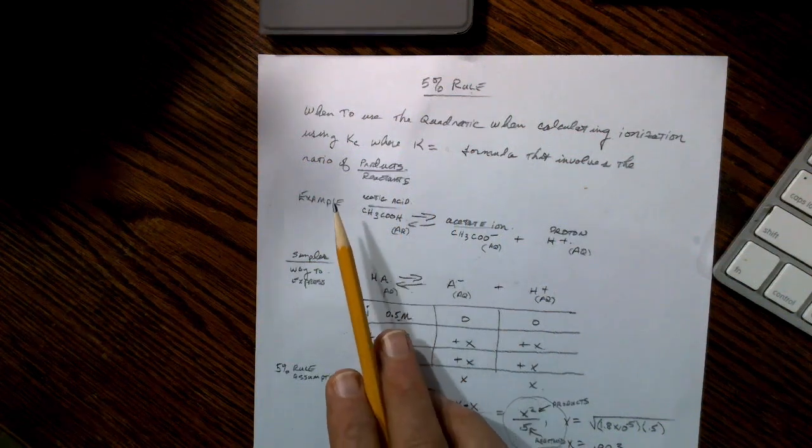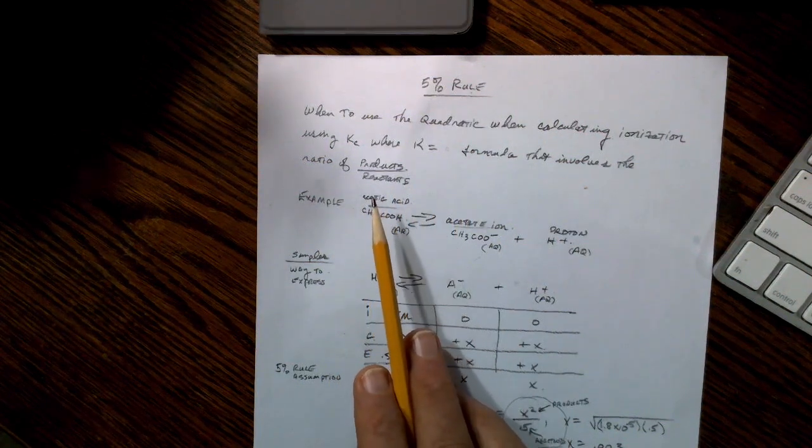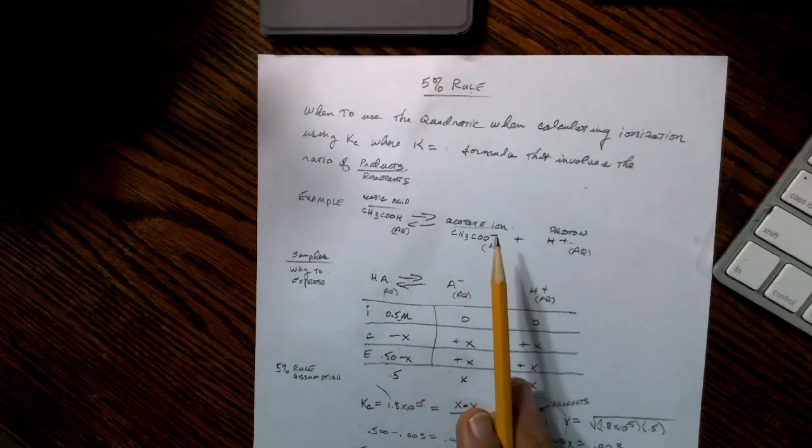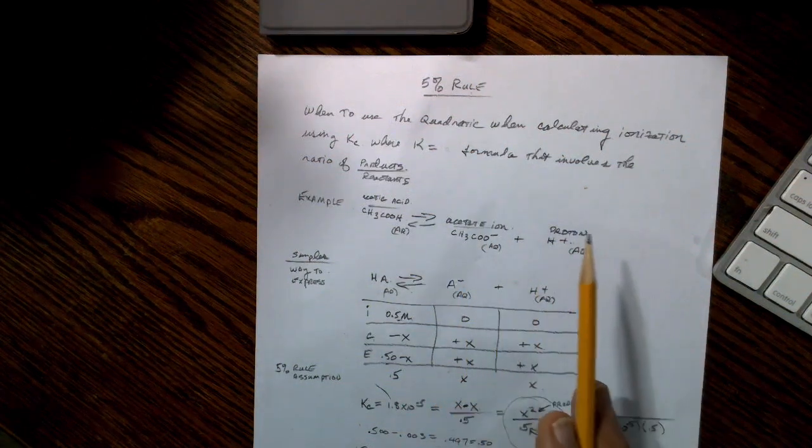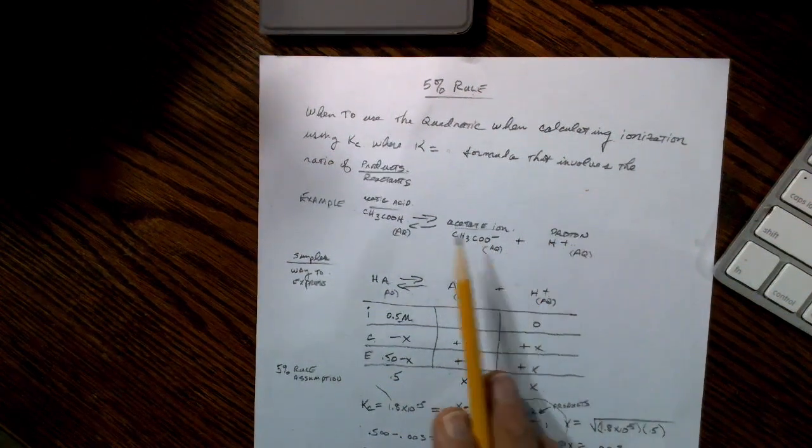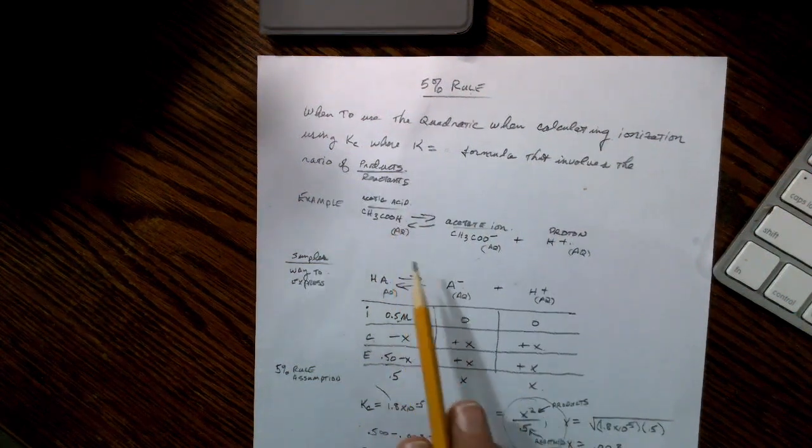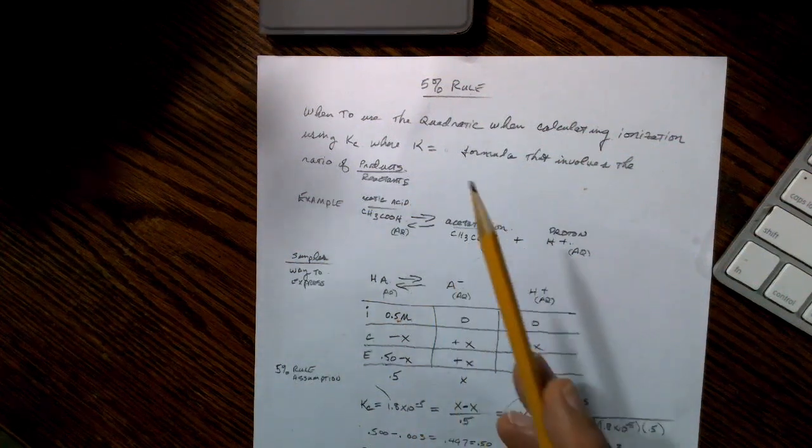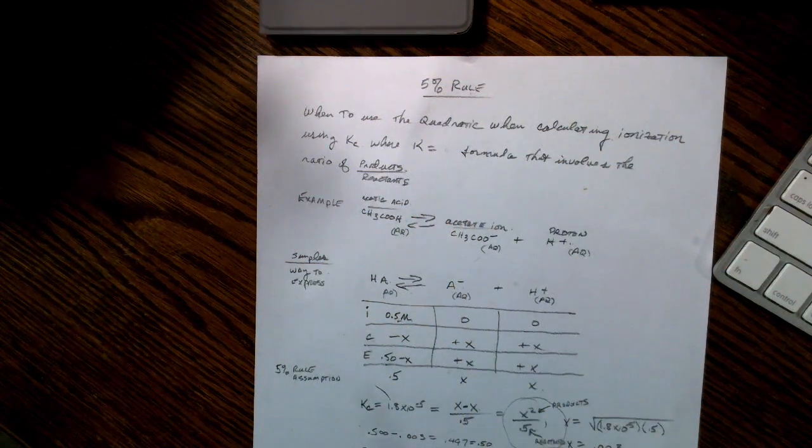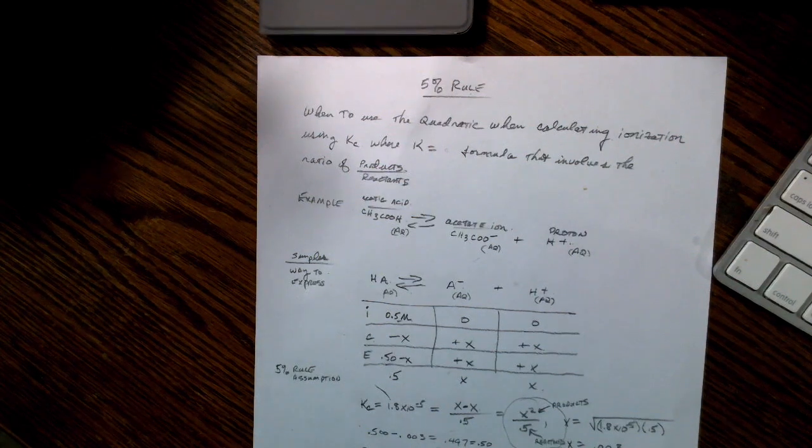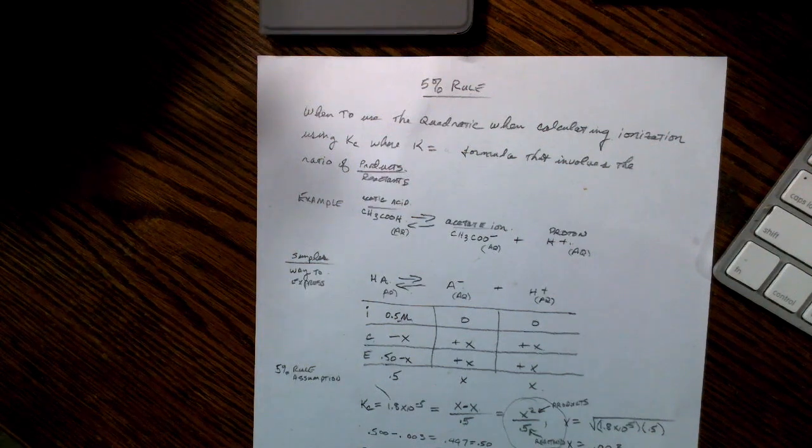If we look at this equation here, this is our vinegar, acetic acid, CH3COOH. And it's in equilibrium with the acetate ion, which is this guy, and a proton. Everything is aqueous. So what we have is this is our products and this is our reactant. This ratio of products to reactants includes dealing with these coefficients becoming exponents, but we don't have to worry about that in this case because everything is one.